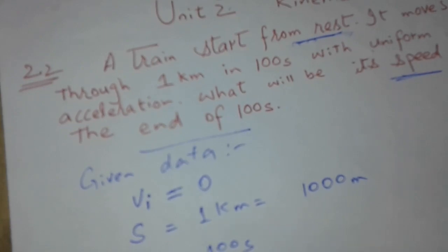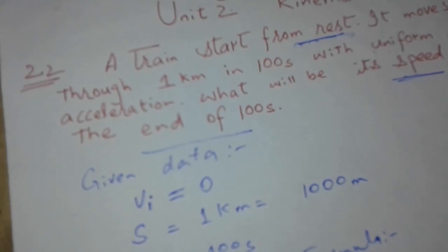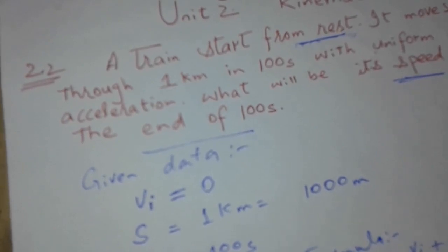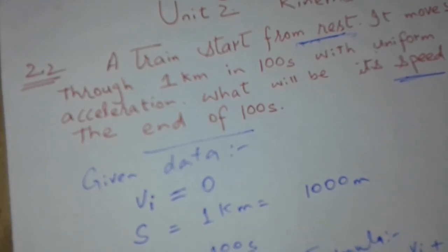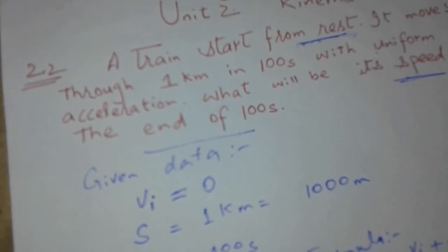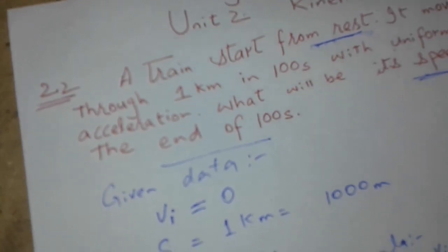Before the solution, we write the formula. We will use the first equation of motion: vf equals vi plus a times t. But first, we need to find acceleration. For that, we will use the second equation of motion: s equals vi times t plus half a t squared.